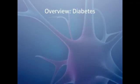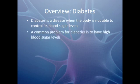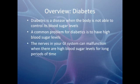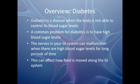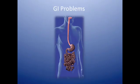Diabetes is a disease that affects many people. It is a disease where the body is not able to control blood sugar levels, causing people to have elevated sugar. When sugar is elevated for long periods of time, it can cause the GI system to malfunction, impairing its ability to move food along it. We will break down these gastrointestinal complications by anatomical divisions.